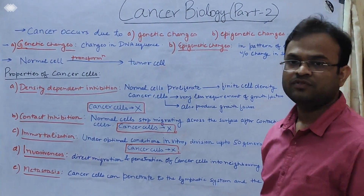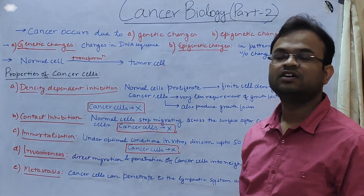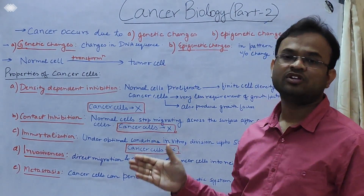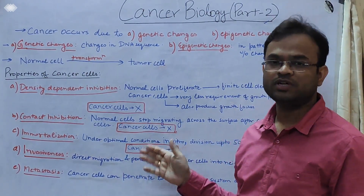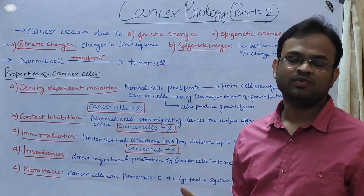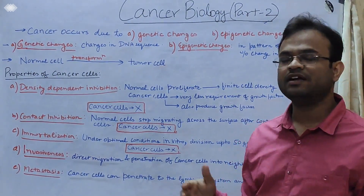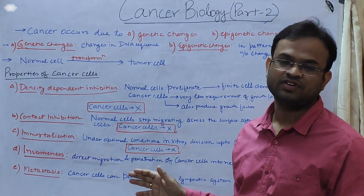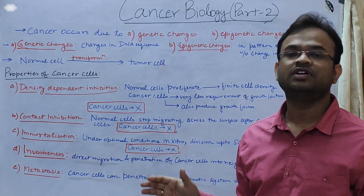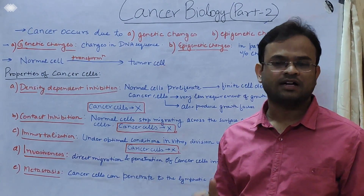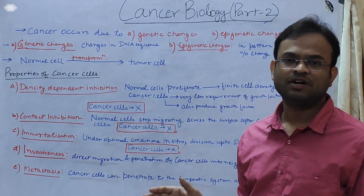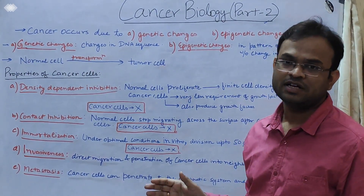Hello, all viewers. This is Dr. Neela with the second lecture of the cancer biology series. In the first lecture, we discussed the differences between normal cells and cancer cells, neoplasms, benign and malignant tumors with their characteristic features, different types of cancers based on the layers in which they are formed — carcinoma, sarcoma, and leukemia — and finally polycythemia vera, which is a type of RBC cancer.